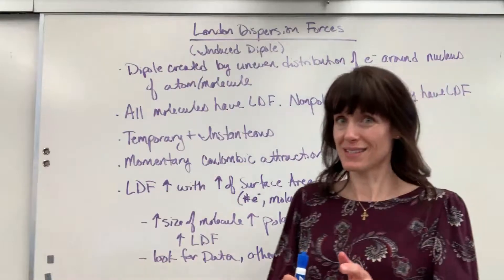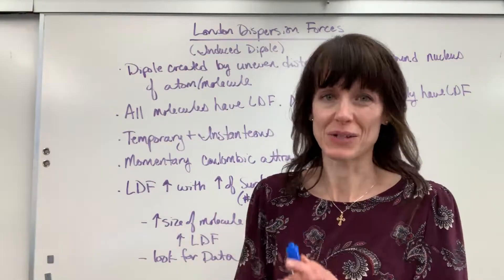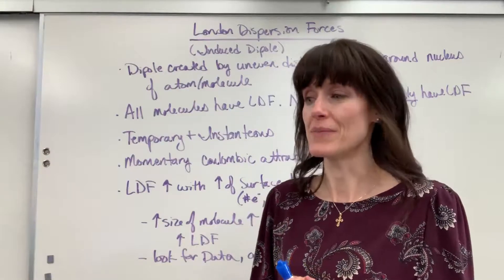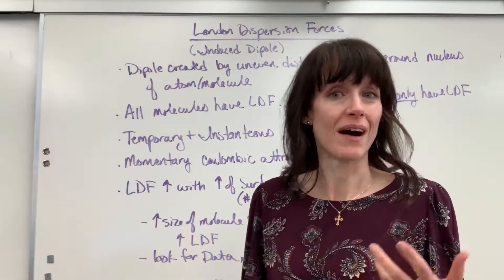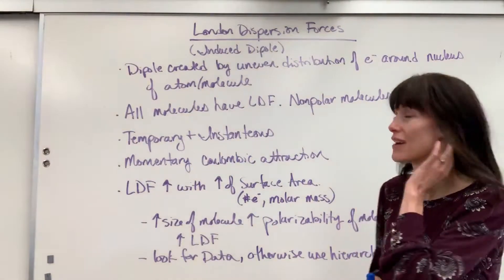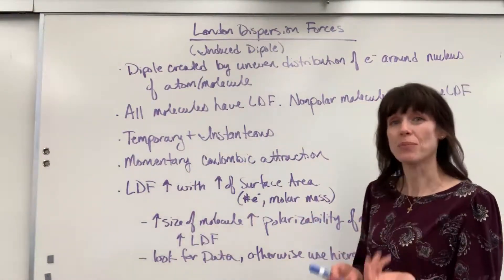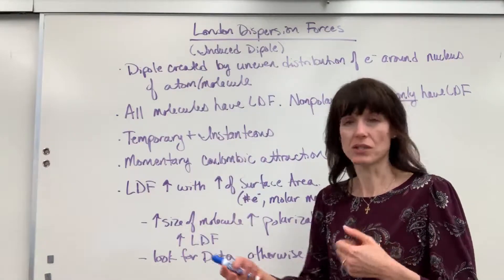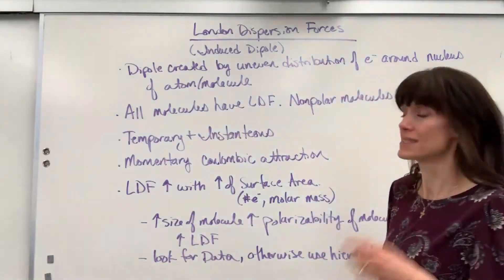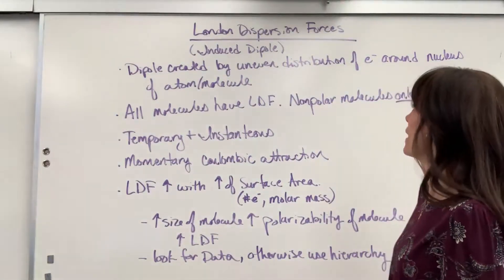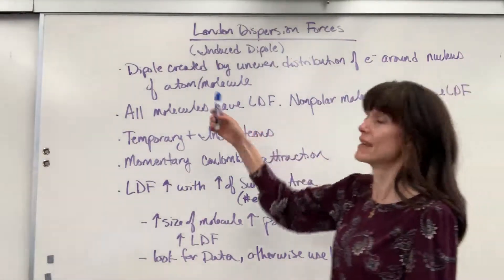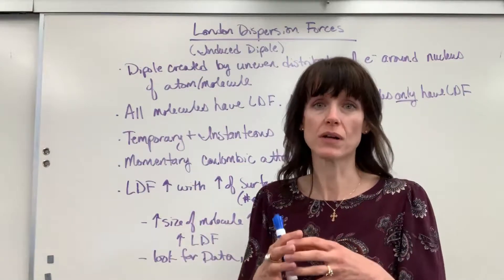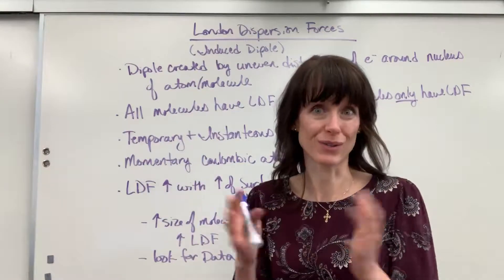This is the weakest of all our intermolecular forces, but don't be fooled — it still can play significantly into IMF, intermolecular forces. Here's the official definition: it is a dipole — remember, uneven distribution of electrons, you have a partial negative and partial positive side — a dipole created by uneven distribution of electrons around a nucleus of an atom or a molecule. This could be looking at groups of molecules, groups of atoms, or atoms and molecules together.